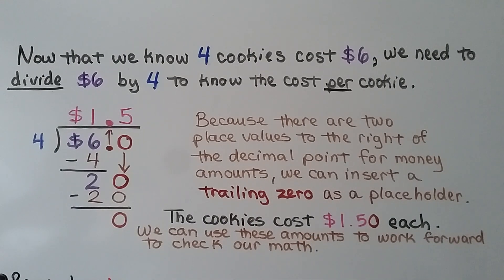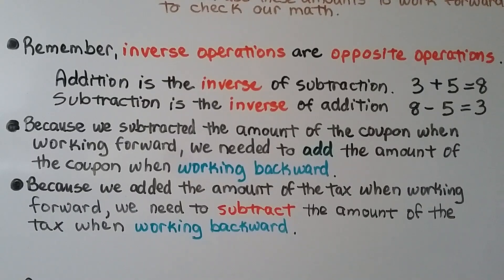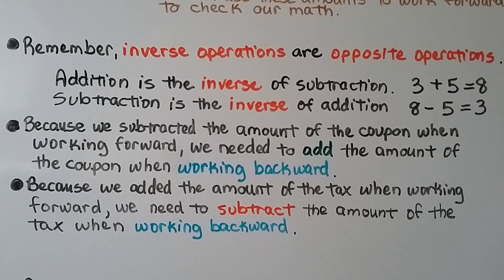We can use these amounts to work forward to check our math — using $6.00, the $0.63 sales tax, and $4.40 for the cost of two cupcakes, we add them all together to verify we get $10.53. Remember, inverse operations are opposite operations: addition is the inverse of subtraction and vice versa. Because we subtracted the coupon going forward, we added it going backward; because we added the tax going forward, we subtracted it going backward.